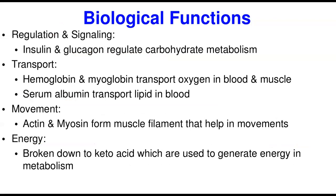Fifth, regulation and signaling: some hormones are proteins. Good examples are insulin and glucagon, which regulate carbohydrate metabolism in the body. Sixth, transport: hemoglobin helps in the transport of oxygen in the blood, while myoglobin helps with the transport of oxygen in the muscle. Serum albumin transports lipids, triglycerides, and other fatty acids that are insoluble in the aqueous medium of the blood.